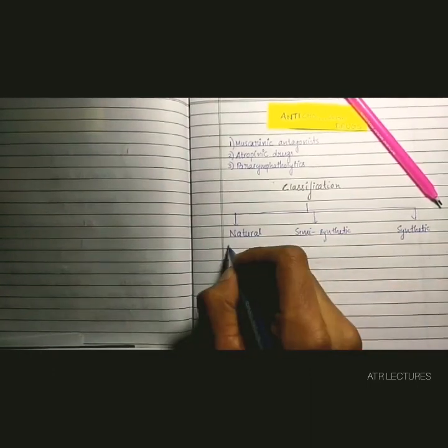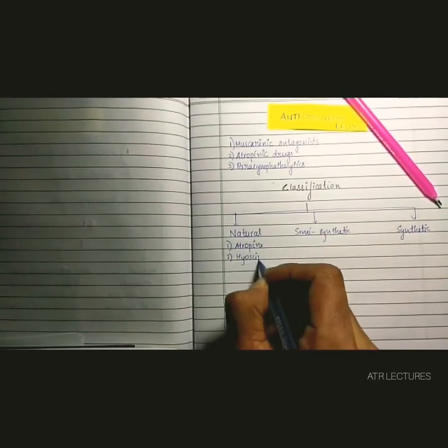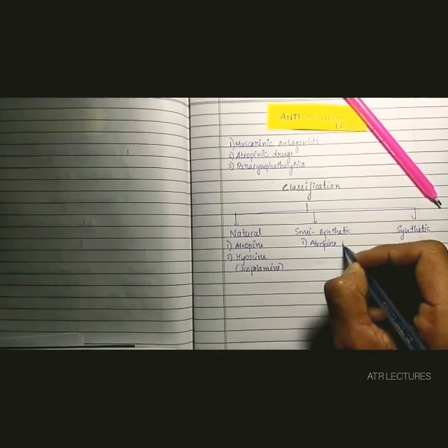Anticholinergic drugs can be muscarinic antagonists, atropinic drugs, or parasympatholytics. Now let's see the classification.